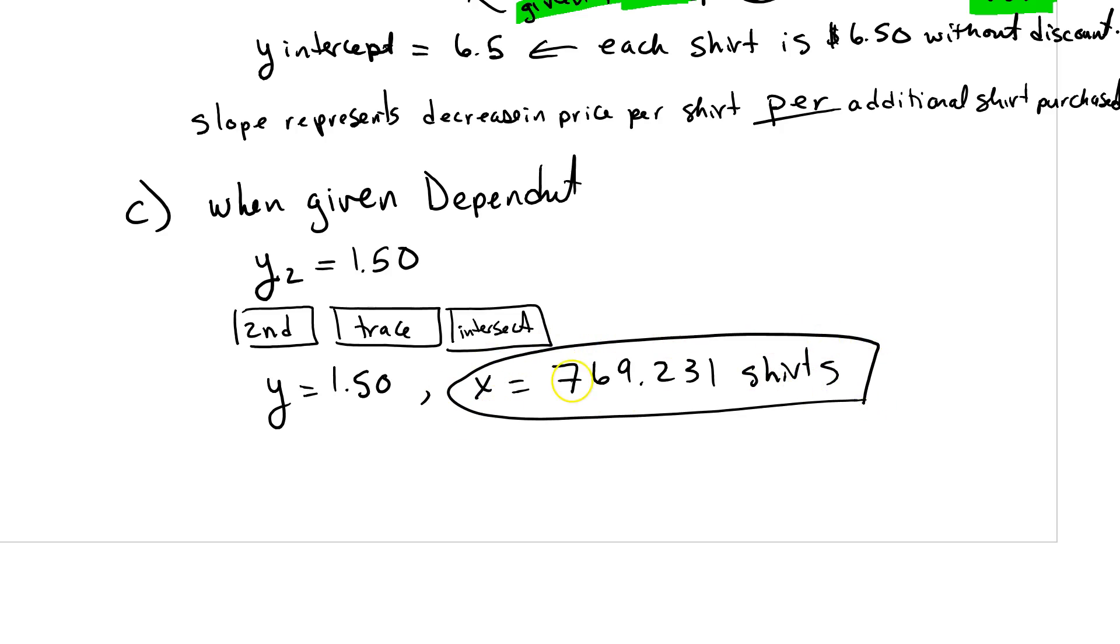But we need to have, since they're discrete, there's no such thing as a partial shirt. And even though that 0.23 should be closer to 769, because it's 769 shirts and a bit, we have to say that the answer to this one is going to be 770 shirts must be purchased to receive a unit price of $1.50.